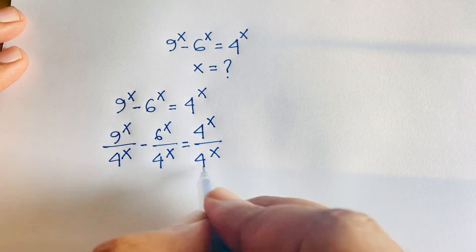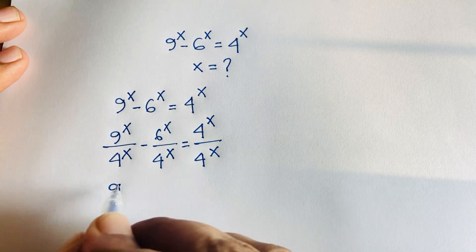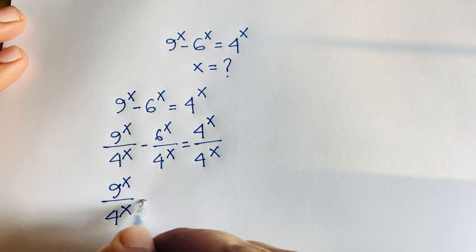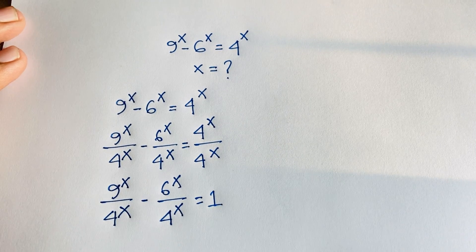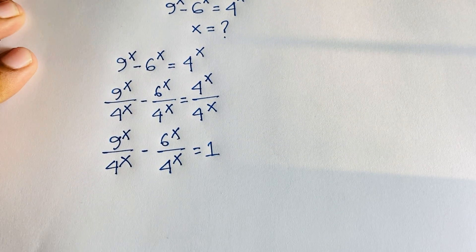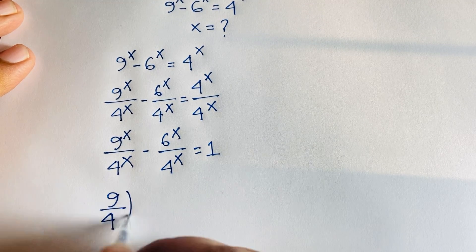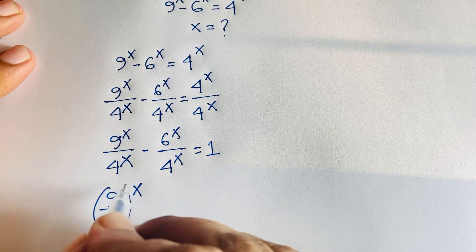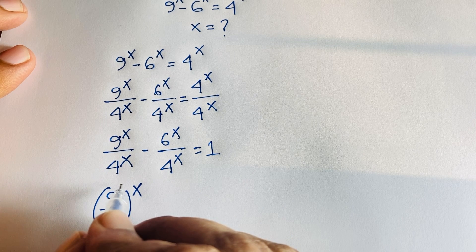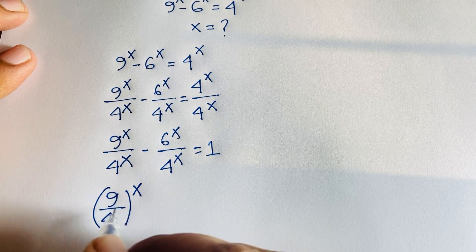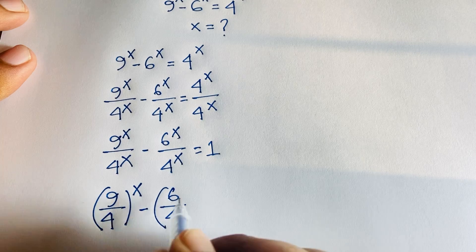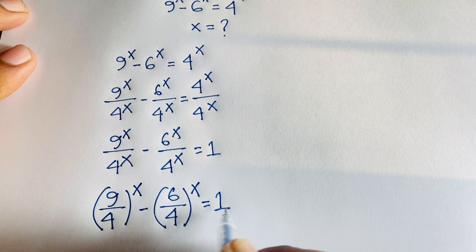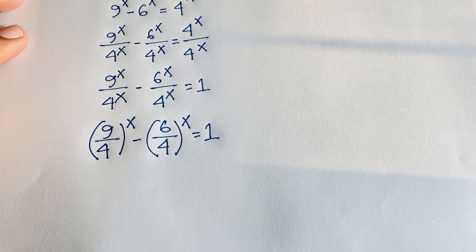The right side cancels to 1. Then, applying the exponential rule — a^n over b^n equals (a/b)^n — the equation becomes (9/4)^x minus (6/4)^x equals 1.